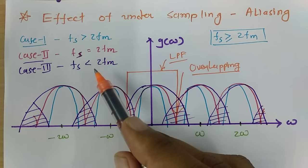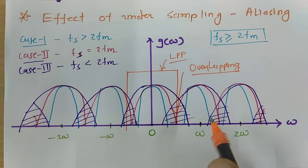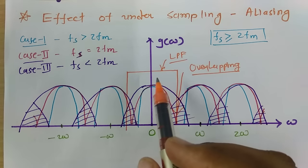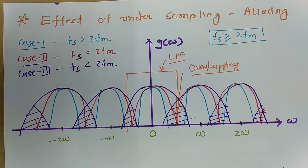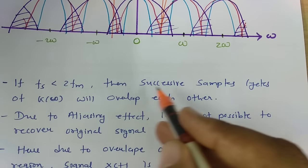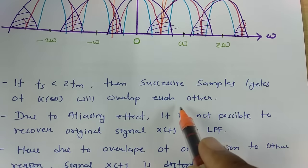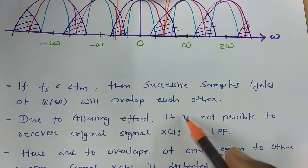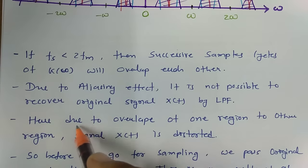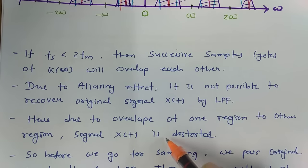If fs is less than 2fm, it is undersampling, and there will be overlapping of consecutive samples in the frequency response. Because of this, there will be distortion when you extract the signal by passing it through a low pass filter. Formally, if fs is less than 2fm, successive sample cycles of G(jω) will overlap each other. Due to the aliasing effect, it is not possible to recover the original signal x(t) using a low pass filter, and the signal x(t) becomes distorted.